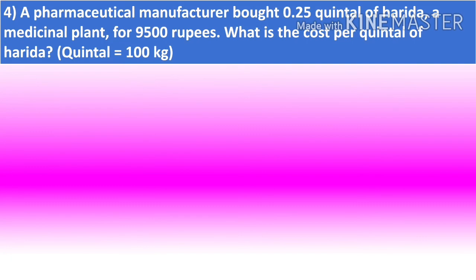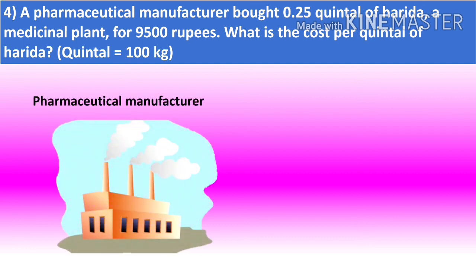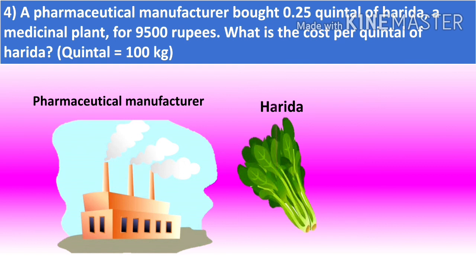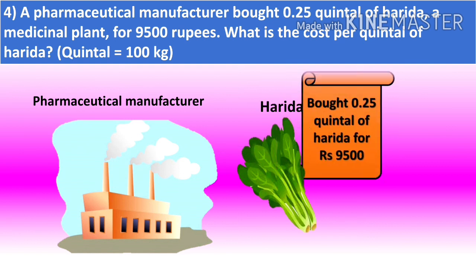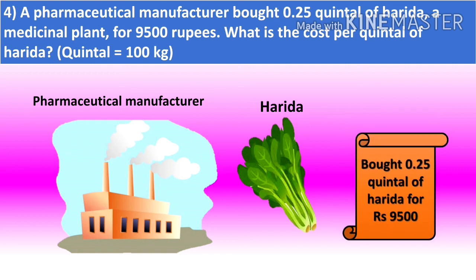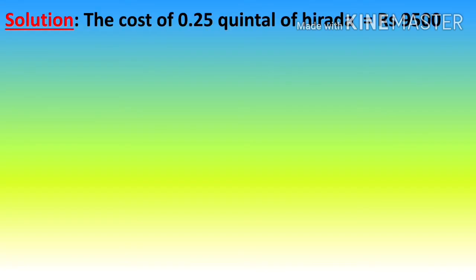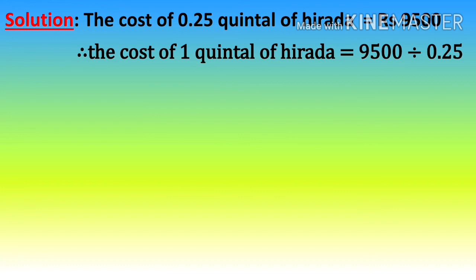Now question number 4: A pharmaceutical manufacturer bought 0.25 quintal of Harida, a medicinal plant, for Rs. 9,500. What is the cost per quintal of Harida? They bought 0.25 quintal for Rs. 9,500, and we have to find the cost of 1 quintal. The cost of 1 quintal of Harida equals 9,500 divided by 0.25.